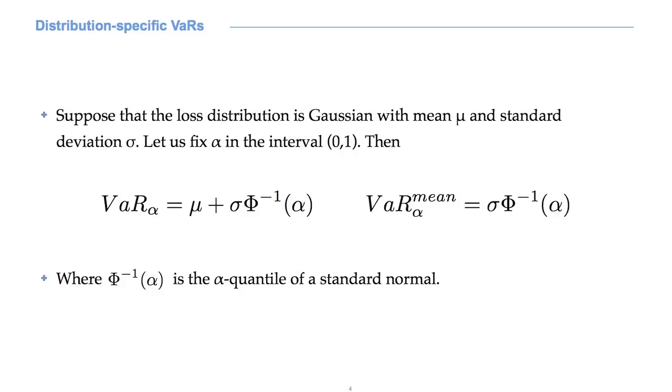If we assume a specific distribution for the loss distribution, we can obtain special formulas for the VaR. For example, for a Gaussian distribution, the VaR is simply computable using the quantile function of a standard Gaussian, that is to say, a normal(0,1). The VaR_α for a normal distribution with mean μ and standard deviation σ is equal to μ plus σ times the α quantile of a standard Gaussian.